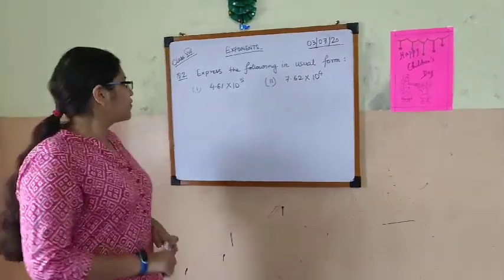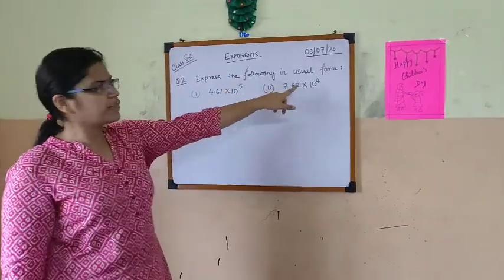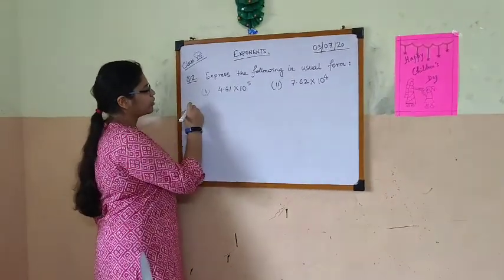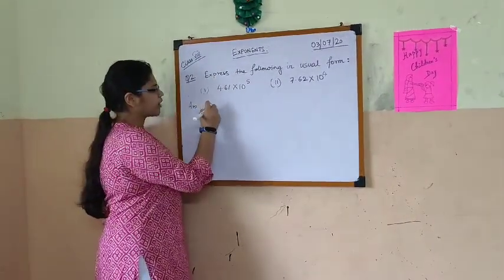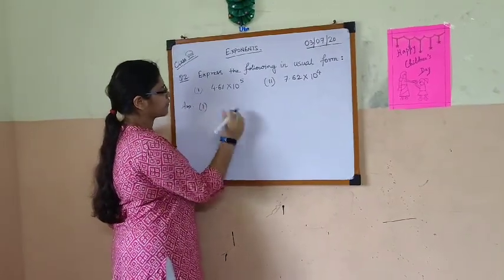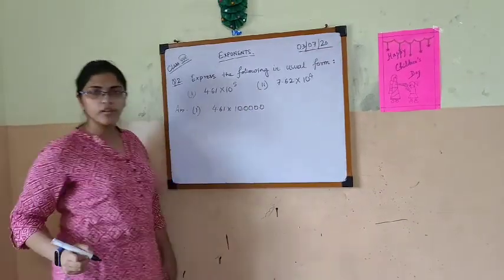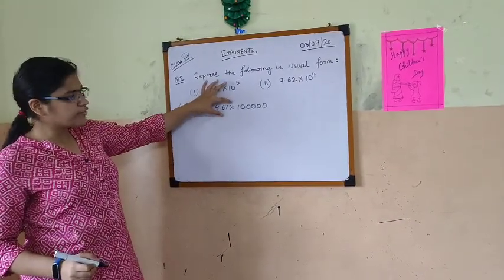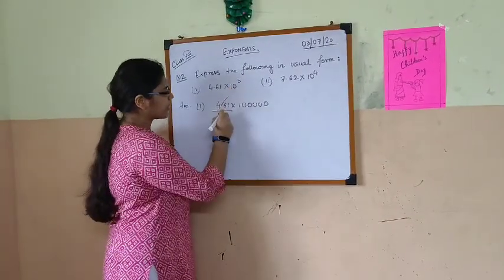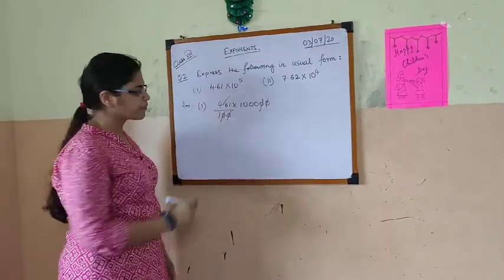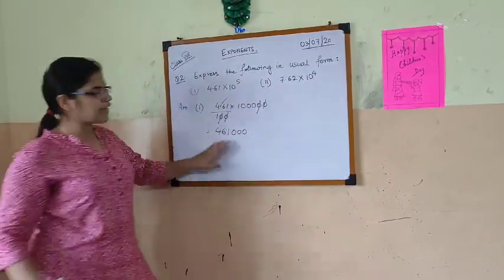Now next we have usual form — we have to convert and we have the standard form given. The first one is 4.61 into 10 to the power 5. For usual form, 10 to the power 5 means 1, 2, 3, 4, 5 zeros. For removing this decimal we have to shift it 2 digits, so that means here we will write 100. This decimal will be removed. Now these 2 zeros and these 2 zeros will cancel, so here we are getting 4 zeros and then 1, 2, 3 zeros. So 461,000 is our usual form.